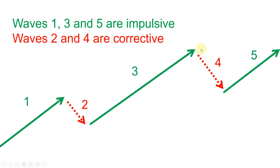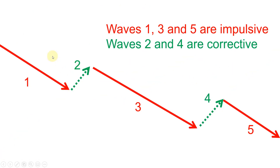Just as a short recap: you've got waves one, three, and five which are impulsive in the trend direction, and waves two and four are corrective, moving against the trend. That can work in an uptrend and it can also work in a downtrend the same way.